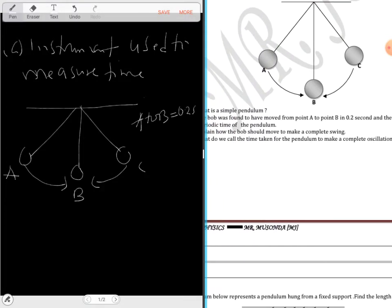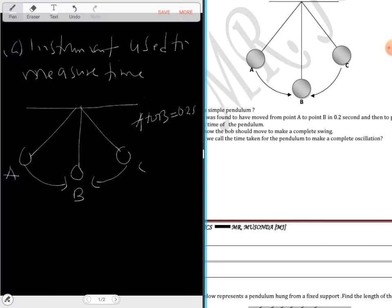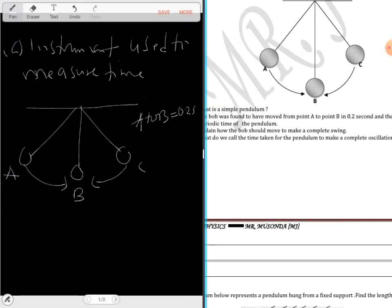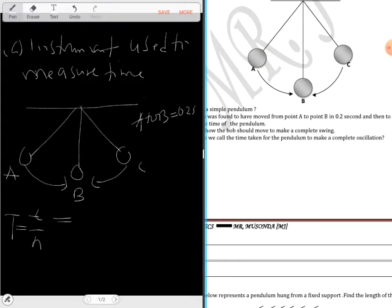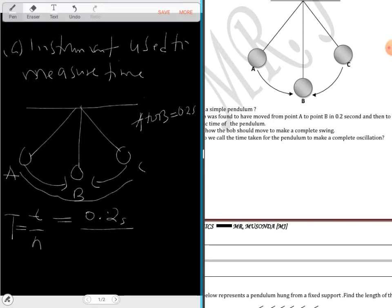Calculate the periodic time of the pendulum. You need to know that period is equal to time taken over number of complete oscillations. The time taken in this case is 0.2 seconds. It moved from A to B then also to C, so it made half an oscillation, 0.5.